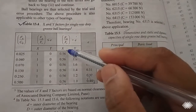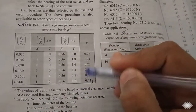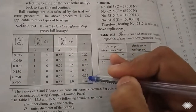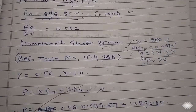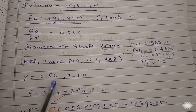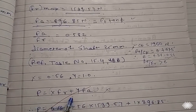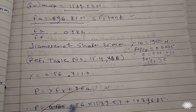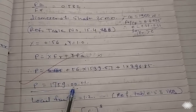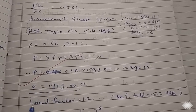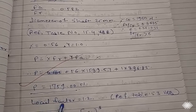Since the value of e lies between two table entries, X and Y also lie between two values. For a better correction, we take interpolation and calculate X and Y accordingly. Then we calculate the equivalent load P, where P equals X·FR plus Y·FA. Putting in all values, we get the equivalent load P.